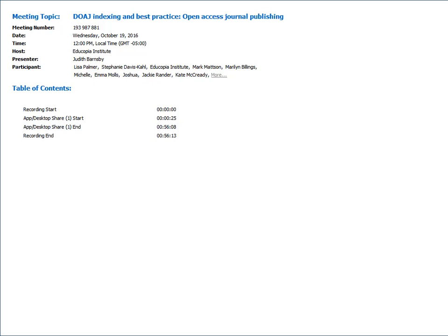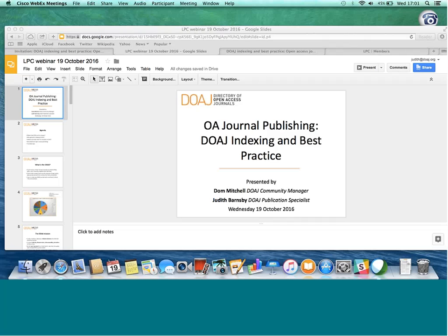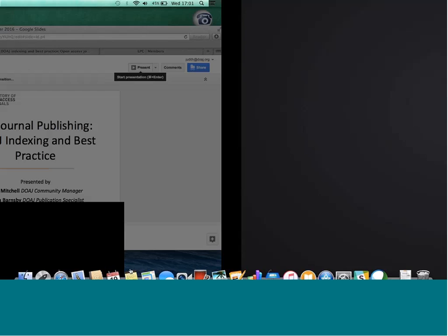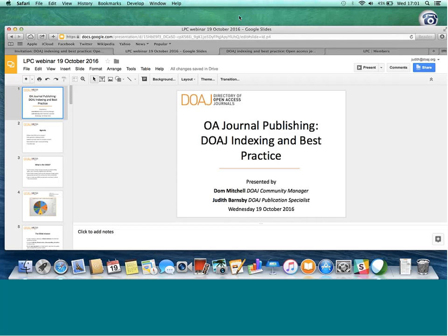Hello everyone, welcome to the first Library Publishing Coalition webinar of the fall 2016 season. The title of today's session is 'Open Access Journal Publishing: DOAJ Indexing and Best Practice.' Getting your open access journal indexed by the Directory of Open Access Journals is becoming increasingly important, as many organizations and funding agencies are now mandating that research is published in a journal included in DOAJ.